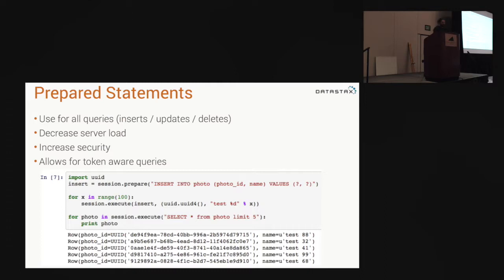Prepared statements decrease server load by keeping a binary representation of what that query is supposed to do. They give you increased security and they give you token awareness. In this example we're doing a prepare of an insert statement — you can see there are placeholder question marks. Then you execute and pass a tuple; in this case we're passing a new UUID string. Here we're executing synchronously, inserting 100 photos into the system. Synchronous is cool, except it's slow and actually not that cool.